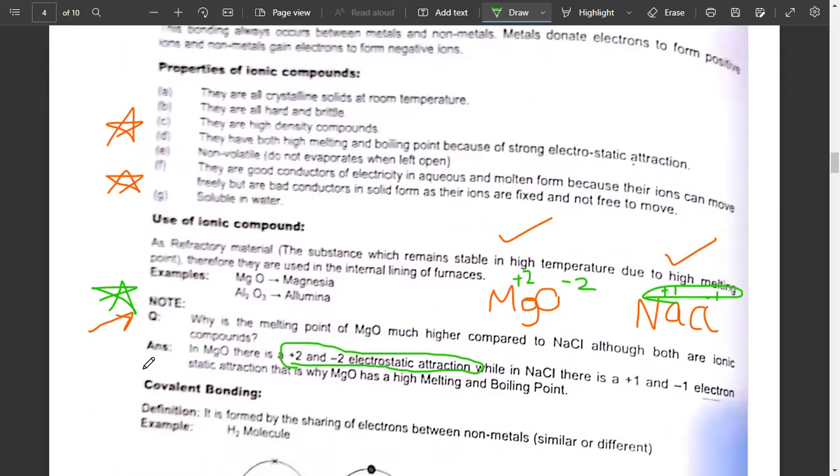These are both ionic compounds. The difference is that magnesium is plus 2, oxygen is minus 2, while sodium is plus 1 and chlorine is minus 1. So plus 2 and minus 2 compounds have much more charge, which we call charge density.